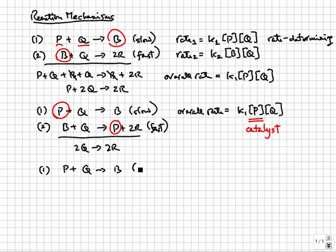Finally, we'll consider one more mechanism: one, P plus Q going to B which is fast, and two, B plus Q going to 2R which is slow. Notice that this is the same mechanism as the first one, except the second step is now rate determining instead of the first.